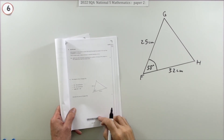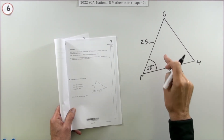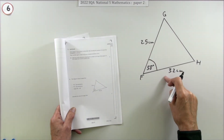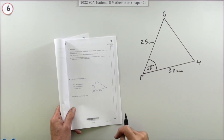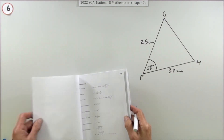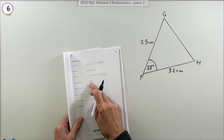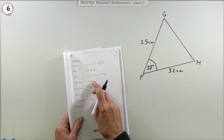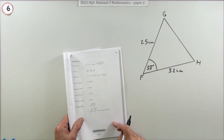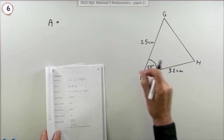Number six - just two marks. In triangle FGH you have two sides and the included angle. That's the pattern for the area of a triangle formula: area = ½ ab sin C. You can look it up at the front of the paper. You need two lengths and the angle between them.